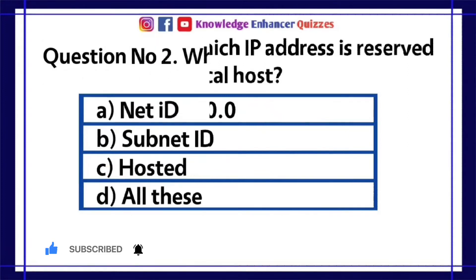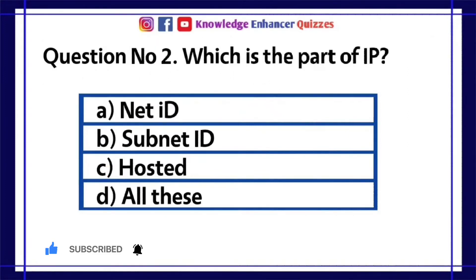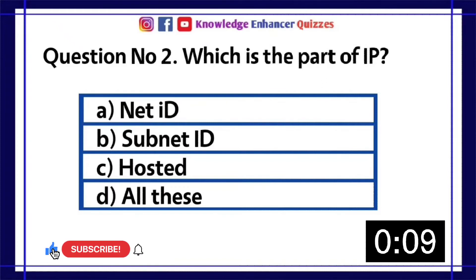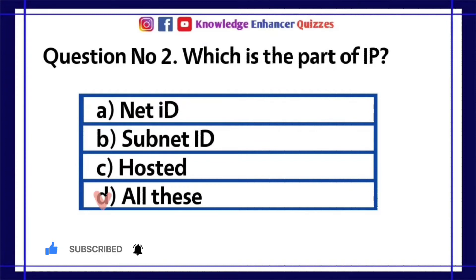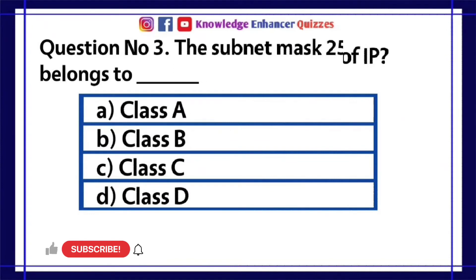Question number 2: Which is the part of IP? A. Net ID, B. Subnet ID, C. Host ID, D. All these. Option D is the right answer.